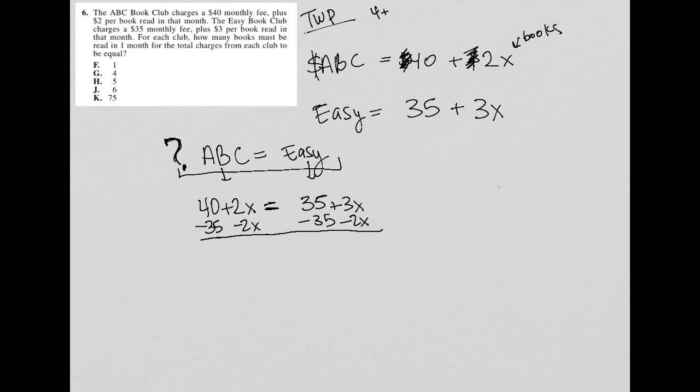So this is gone. 40 minus 35 is 5 equals 3X minus 2X is X. And therefore, the number of books that would be required for both clubs to have an equal monthly fee is 5 books. And our answer is therefore choice H.